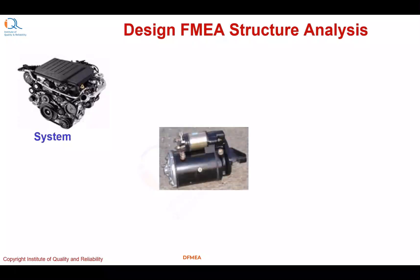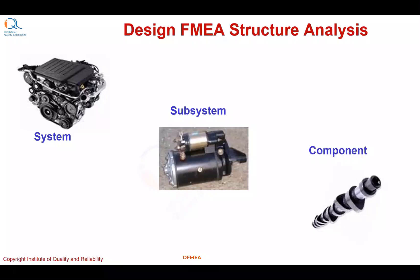In structure analysis of design FMEA, we look at the top-level system, then a subsystem, and then a component. There may be more than three levels — there may be 4, 5, or 6 levels depending on the complexity of the product.